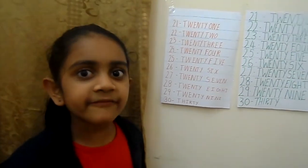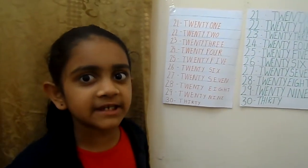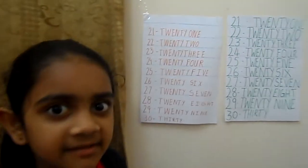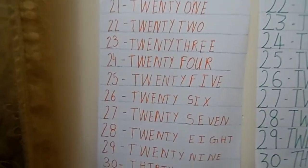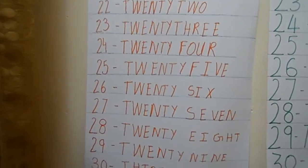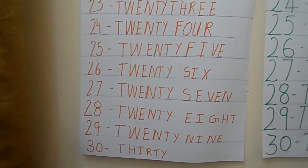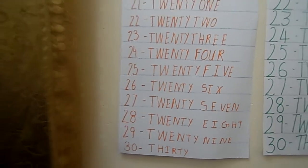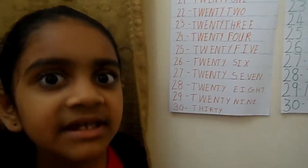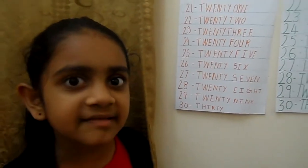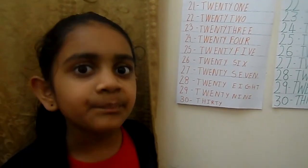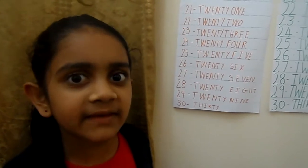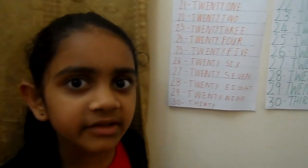25: T, W, E, N, T, Y, F, I, V, E. Next, 26: T, W, E, N, T, Y, S, I, X. 27: T, W, E, N, T, Y, S, E, V, E, N.